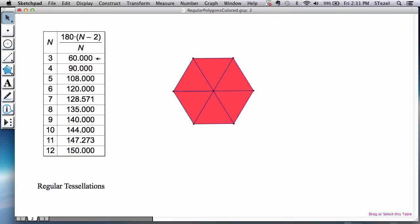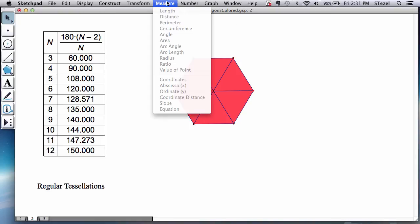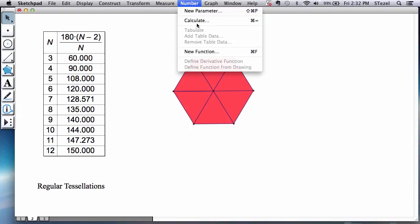We know that this works, and to understand why this works, let's just remember that around the point this whole space here is 360 degrees. The question really is, does the interior angle of the polygon we are dealing with, in this case a triangle, does the number 60 evenly divide 360?